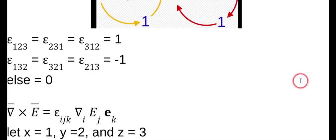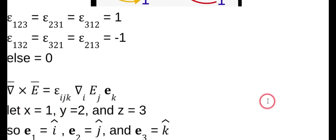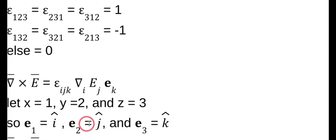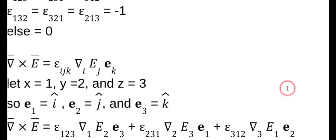So you say del cross E is equal to epsilon i, j, k, del, the i-th component of del, or the j-th component of E times the k component of your basis of the vector. So in our case, we're going to let x equal 1, y equal 2, z equal 3. Which means that E1 is just i-hat, E2 is j-hat, and E3 is k-hat. So we can write this down and start doing our permutation operators. So we'll just go epsilon 1, 2, 3. So you see i, j, k is 1, 2, 3. So that means i is equal to 1, j is equal to 2, and k is equal to 3.